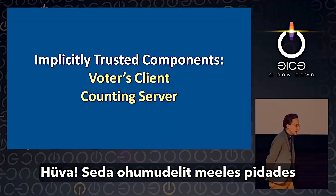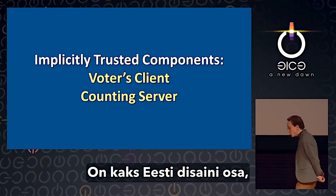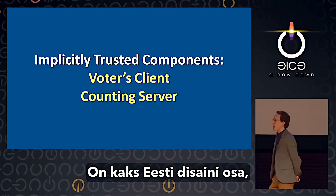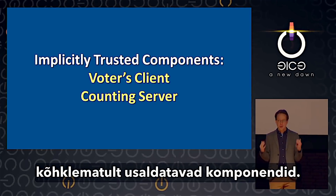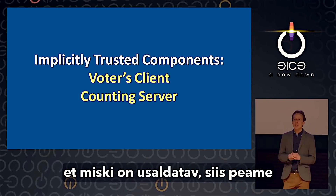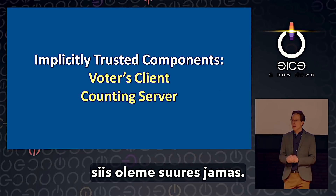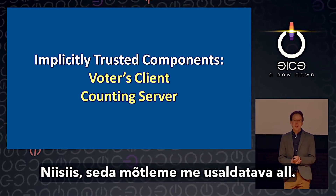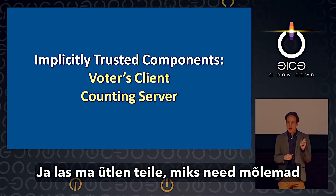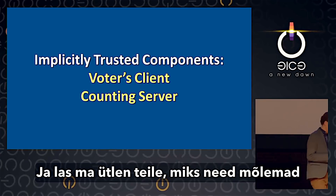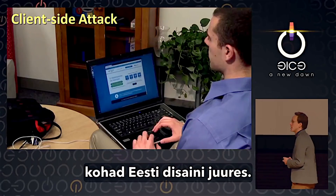With that threat model in mind, let's evaluate the design of Estonia's system. There are two components that, just by reviewing the design, you can tell are implicitly trusted components. In security, when we say something is trusted, we mean basically that if it's hacked into, we're in serious trouble. These two components are the voter's client and the counting server, and both are serious vulnerability points in the Estonian design.